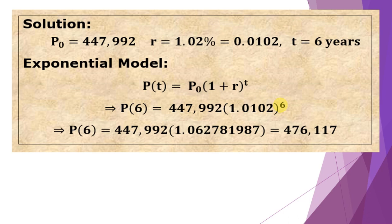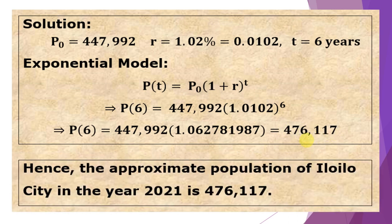So the population of Iloilo City in the year 2021 will be 476,117 people. Hence, the approximate population of Iloilo City in the year 2021 is 476,117 people.